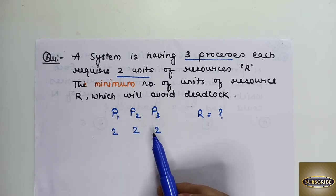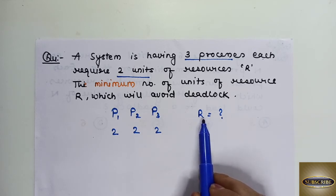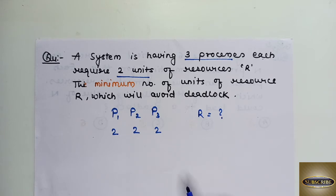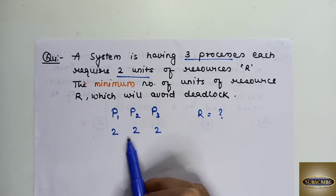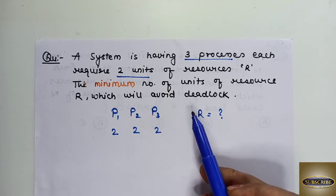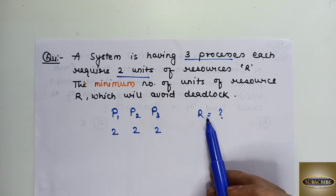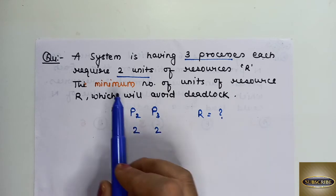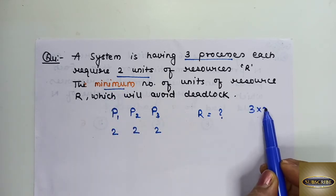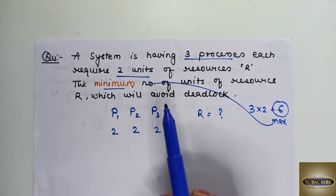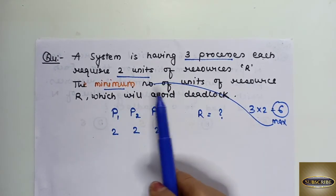The maximum number of units is straightforward: 3 processes times 2 units each equals 6 — that's the maximum. But we want the minimum number of units of resource R which will avoid deadlock. Can we take R=2? With only 2 units available for 3 processes each needing 2, there will definitely be situations that lead to deadlock. So 2 is not sufficient.